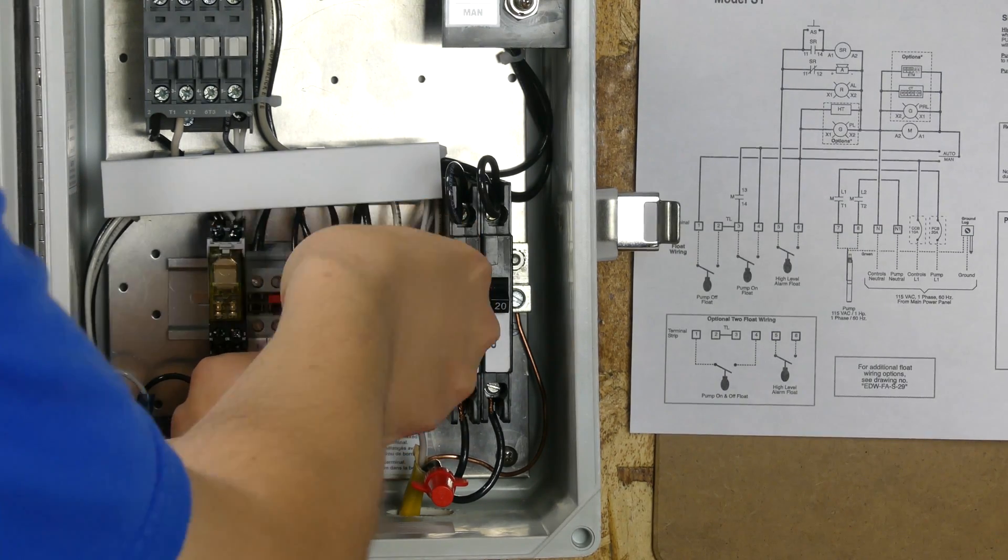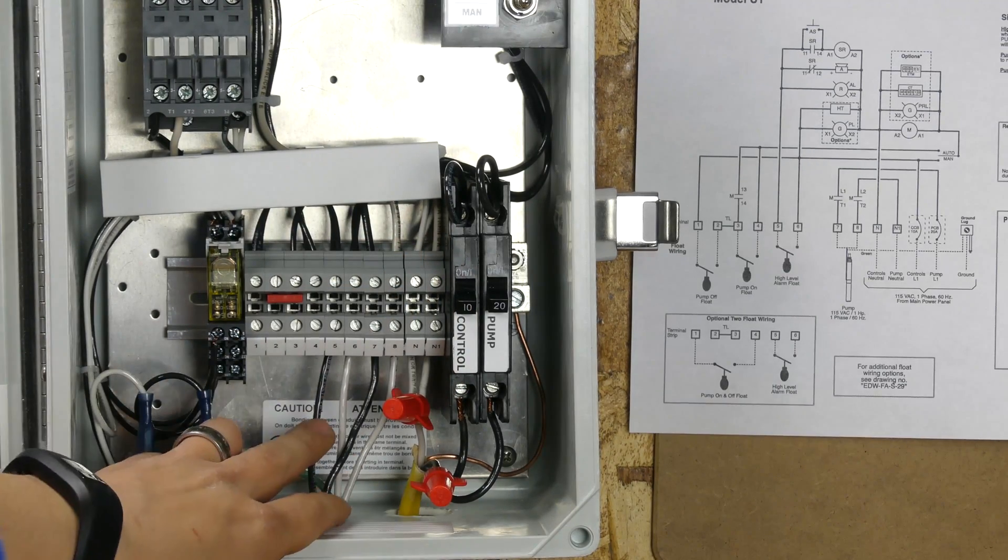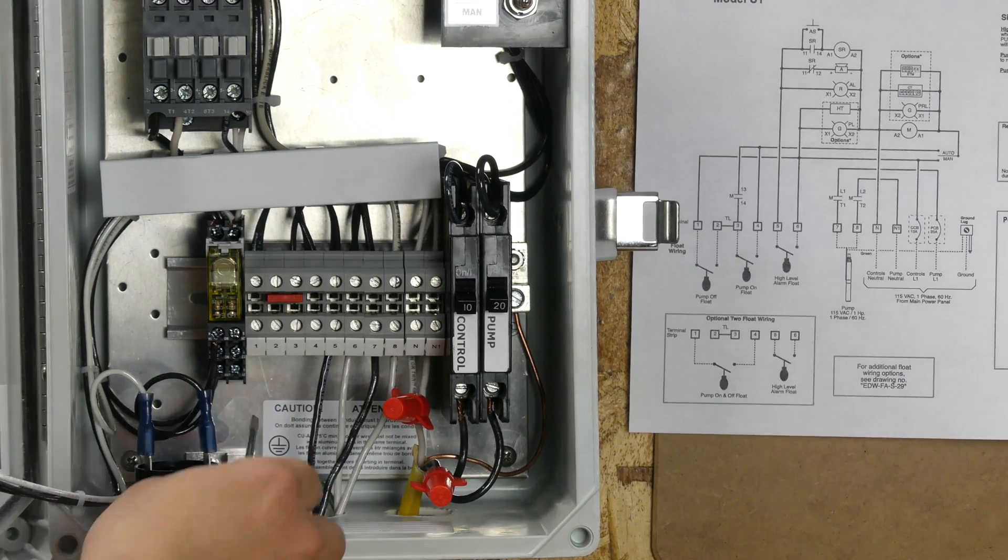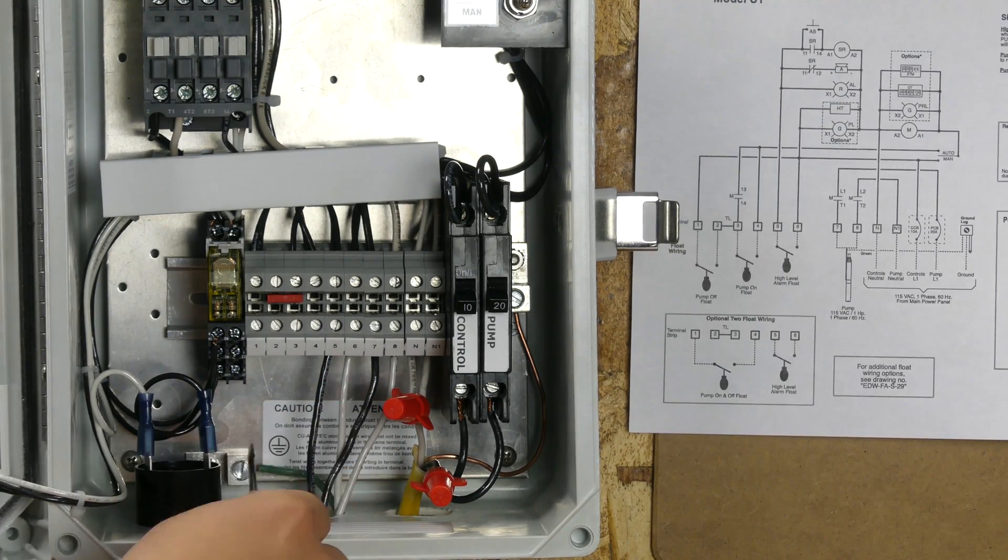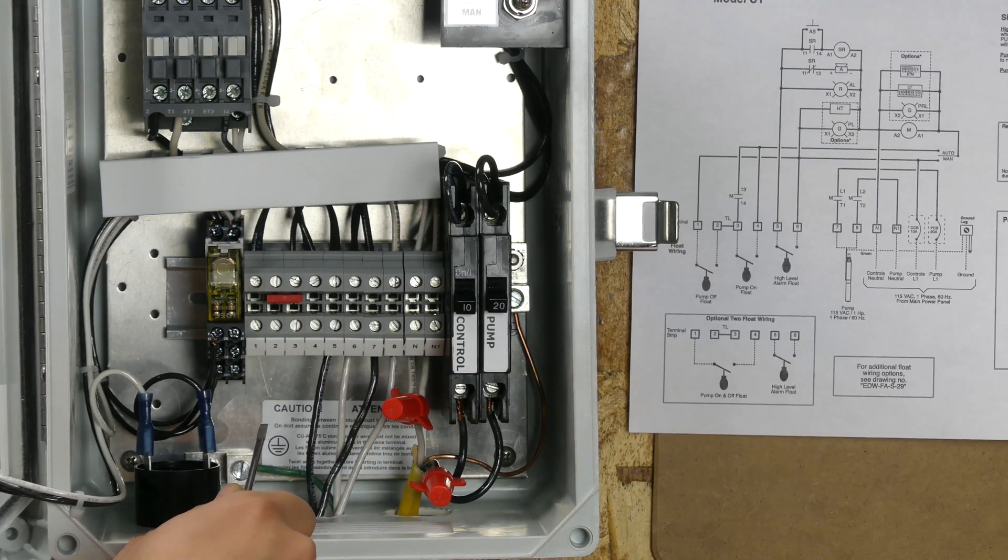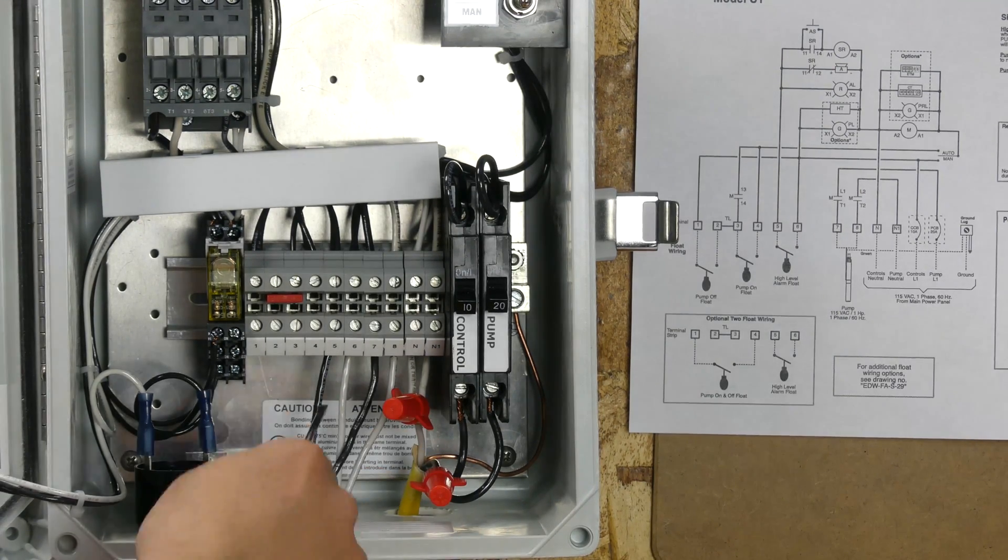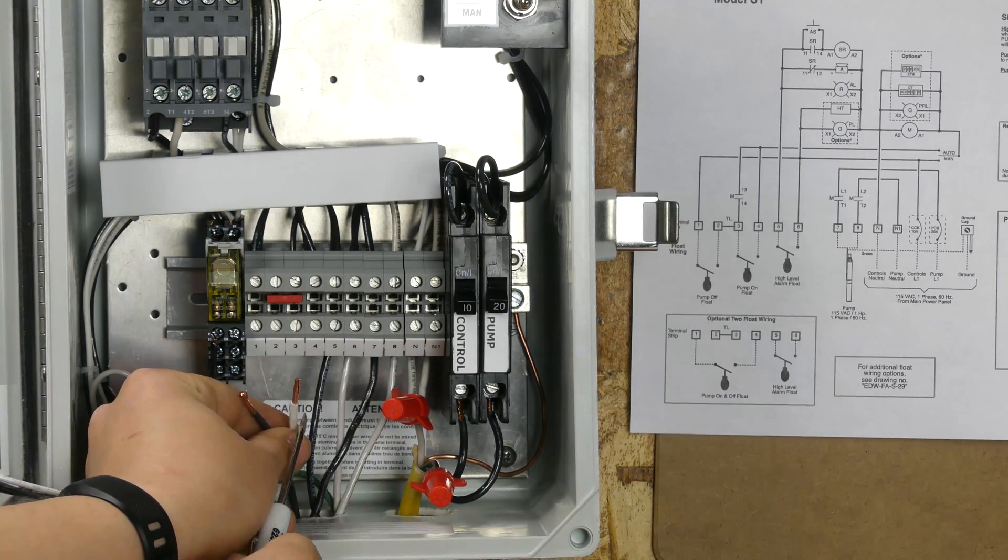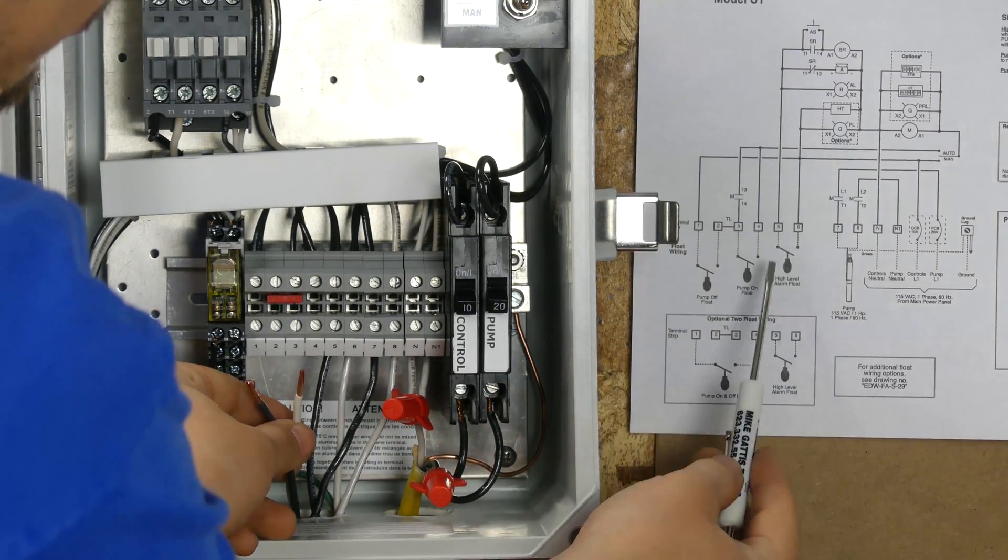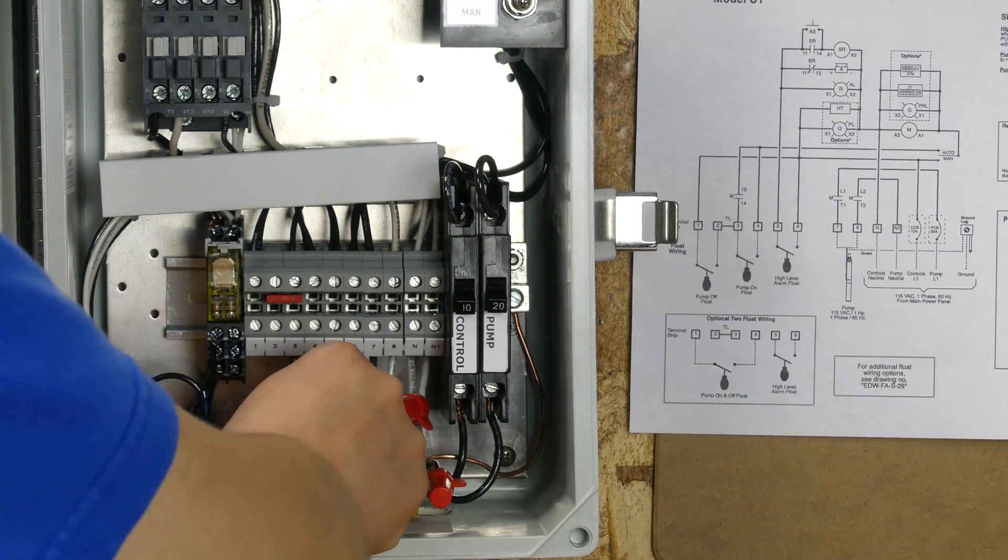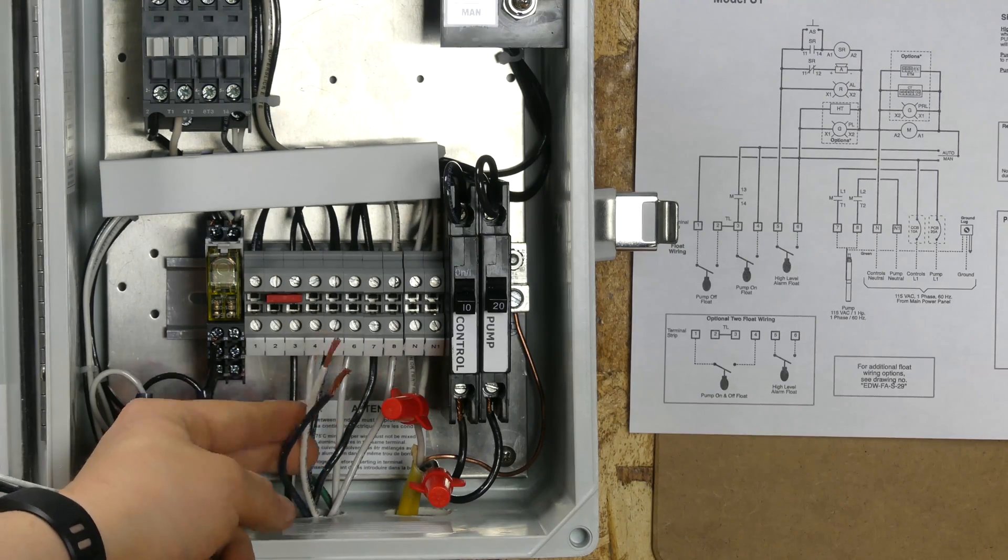Another thing to remember with float switches is in this configuration it really doesn't matter which wire goes to which side, so I could have flip-flopped these and the panel will still work just fine, but we'll just stick with the white and black pattern. The next float we're going to be hooking up here, this is going to be our middle float. This is the pump-on float.